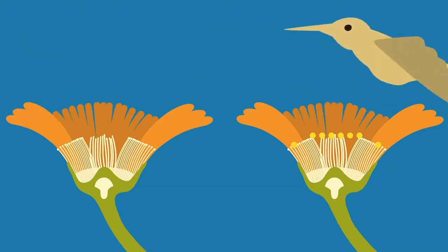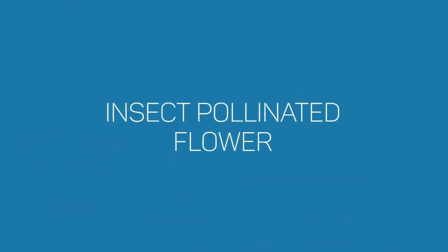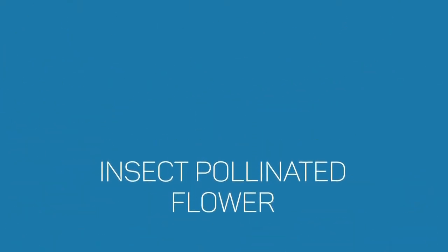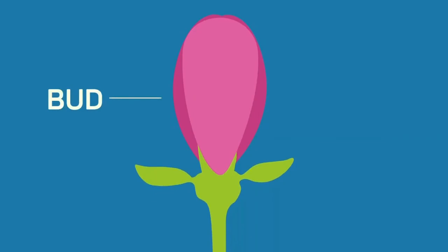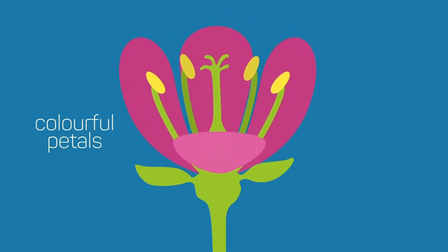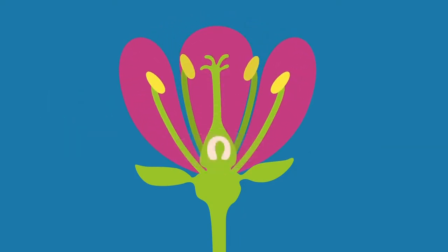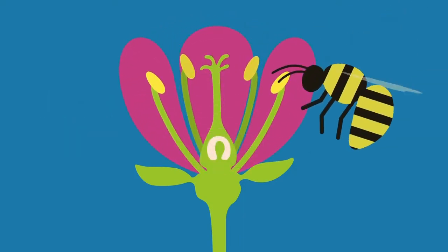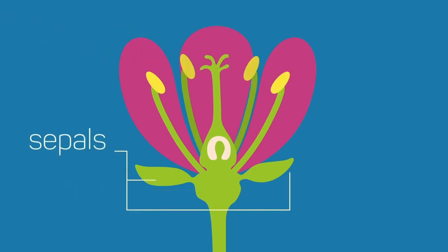Here we will look at the structure of an insect-pollinated flower. Insect-pollinated flowers usually have colorful petals to attract the insects. Insects visit flowers to drink the nectar, a sugary substance produced in the nectary. The sepals protect the bud when the flower is developing.